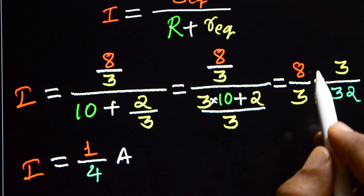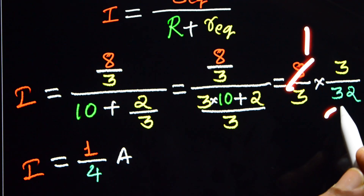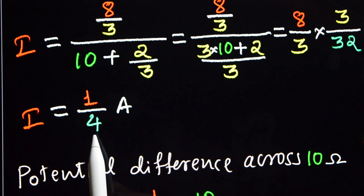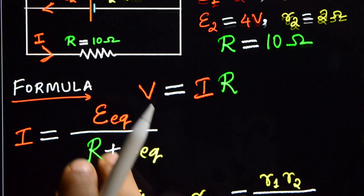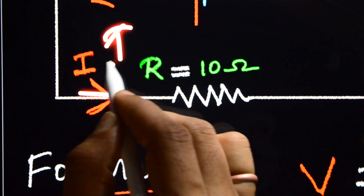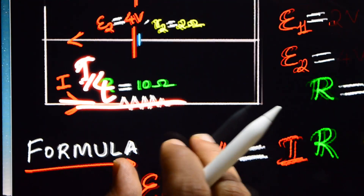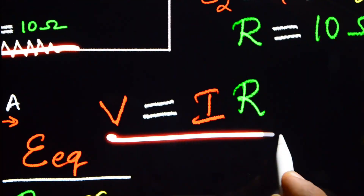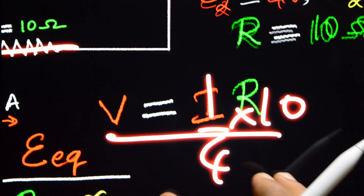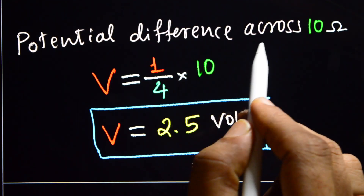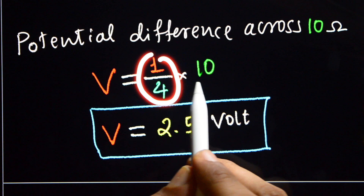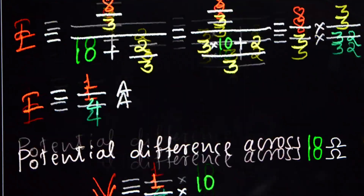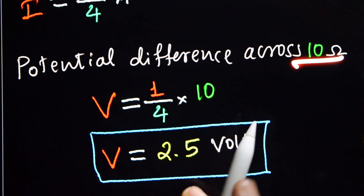The 3s get cancelled, giving I equal to 8/32, which simplifies to 1/4 ampere. Using V equals I into R: potential difference across the 10 ohm resistor equals (1/4) into 10, which equals 10/4, equal to 2.5 volt. The potential difference across the 10 ohm resistor is 2.5 volt.